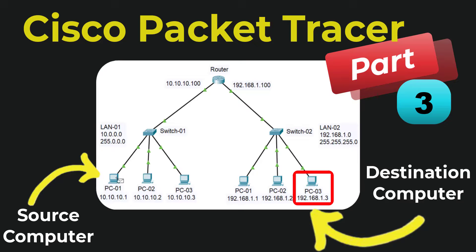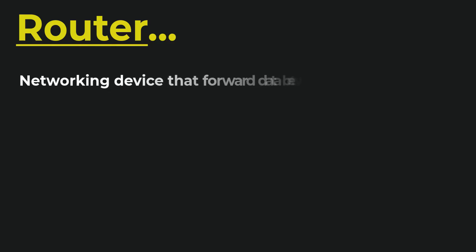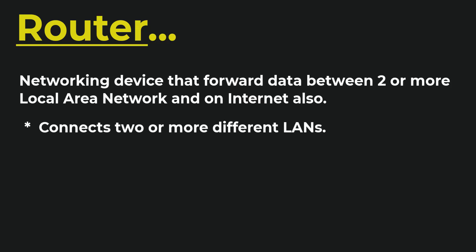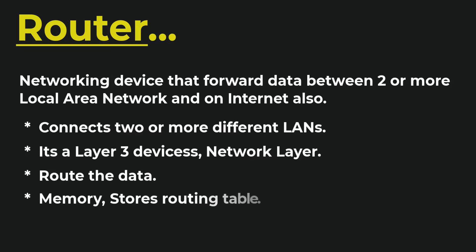Welcome back to the next video of the Cisco Packet Tracer series. Today we will discuss routers. A router is a networking device that forwards data between two or more local area networks and on the internet. A router connects two or more different local area networks. It is a Layer 3 device as per the OSI model and operates in the network layer. It routes data and stores a routing table in its memory.